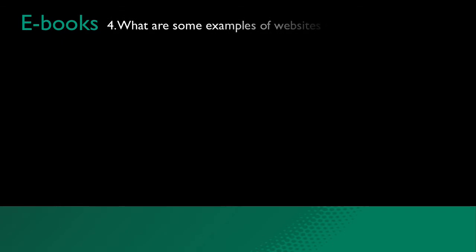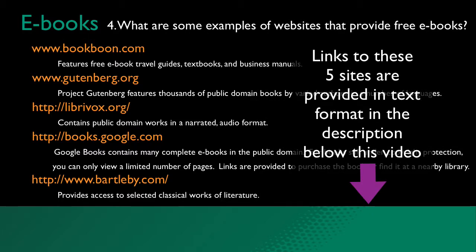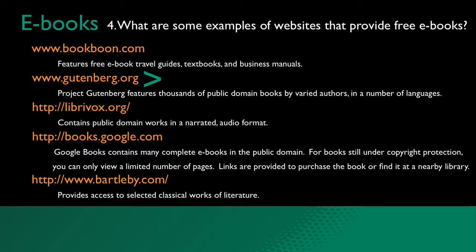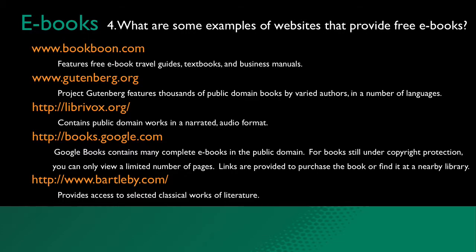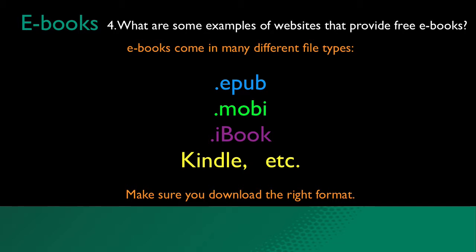Question 4: What are some examples of websites that provide free e-books? Here is a listing. Two of the more popular e-book sites are Project Gutenberg and LibriVox. Both Project Gutenberg and LibriVox allow individuals to freely read or listen to books now in the public domain. Public domain works once possessed a copyright, but through the passage of time the copyright expired, which now allows anyone access to the material for free and without penalty of copyright infringement. When looking for an e-book to read or download, make sure the file type is supported by your e-book reader, whether that be EPUB, Mobi, iBook, Kindle, or something else.